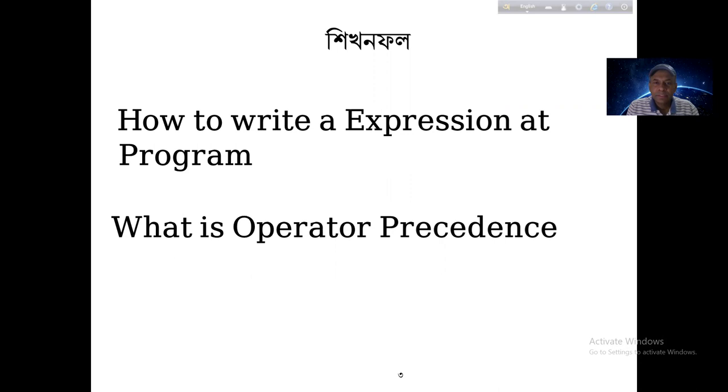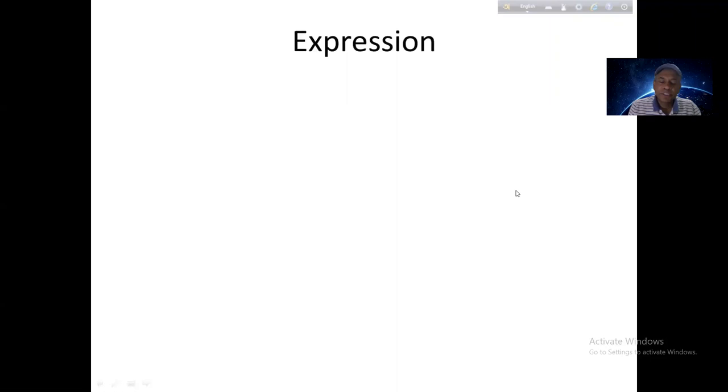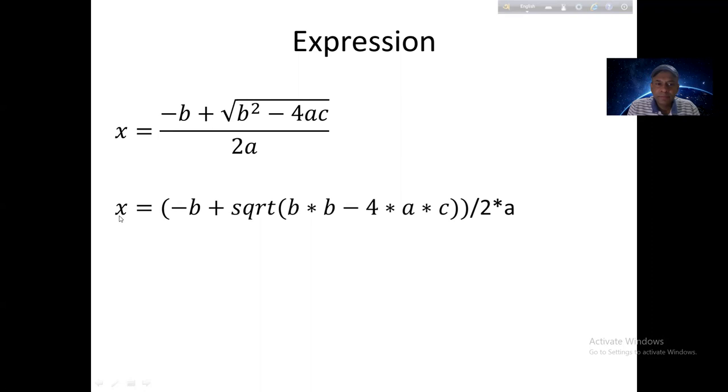Let me show you how to write this expression. The expression is x equals minus b plus square root of b squared minus 4ac divided by 2a. In C, we write: x equals minus b plus sqrt, b into b minus 4 multiplication a multiplication c divided by 2 into a.